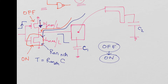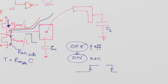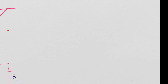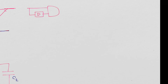On a rising edge at the input: P turns off first, then N turns on. On a falling edge at the input: N turns off first, then P turns on. So how do you design this? We have already looked at the delay cell. If you take an AND gate and add a CMOS delay cell — please look at that video for the CMOS delay cell — you have an AND gate with the input and the delayed input.